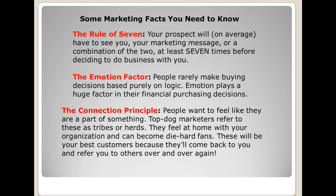The next thing is the Connection Principle. People want to feel like they're part of something. Top dog marketers refer to these as tribes or herds. If you're not familiar with Seth Godin, I'd highly recommend his books. Seth Godin's book about tribes is about how to get people to identify with your company so much they feel they are part of your organization. Getting them so familiar with you that they think they're a part of you gives you all sorts of credibility in the marketplace.